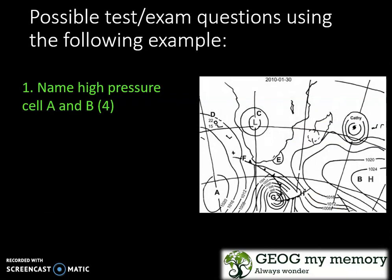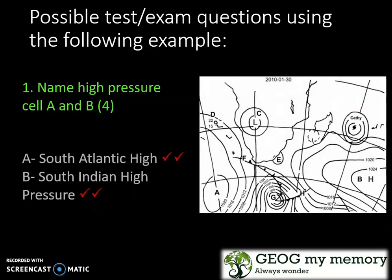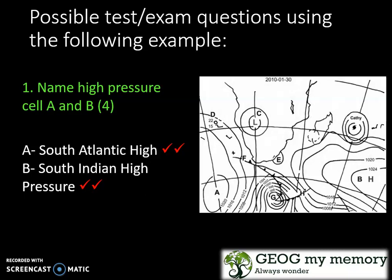Question one: name high pressure cell A and B for four marks. A is your South Atlantic High and B is your South Indian High.